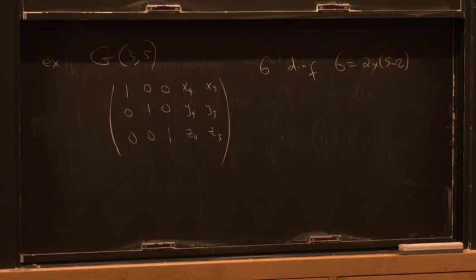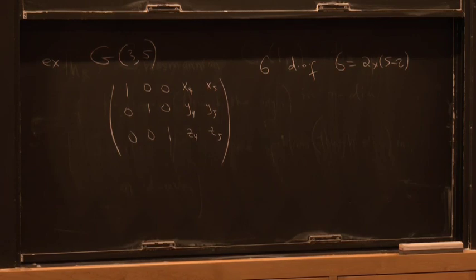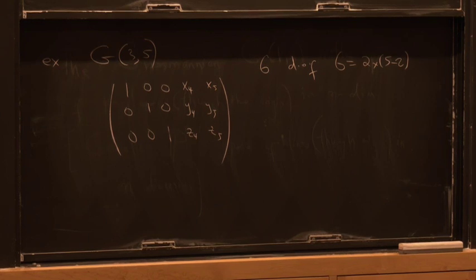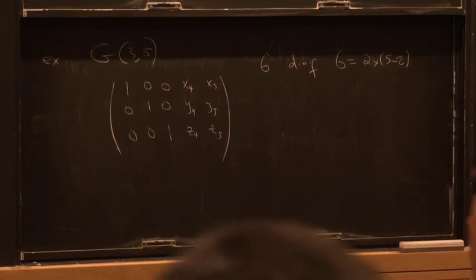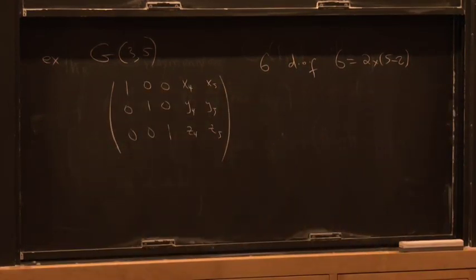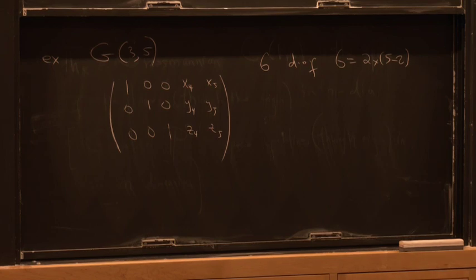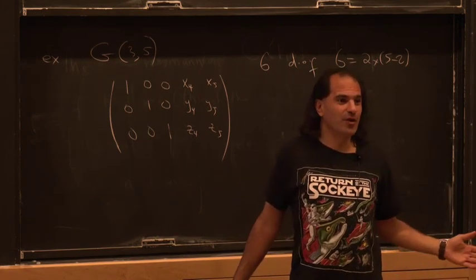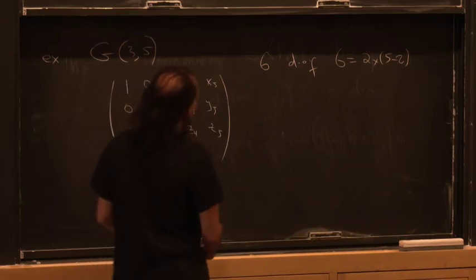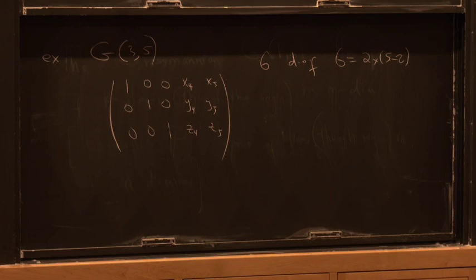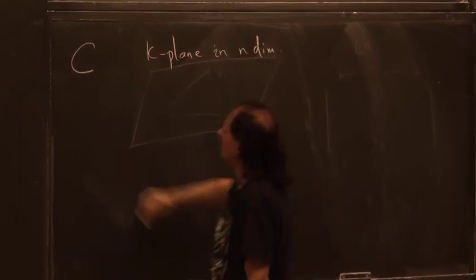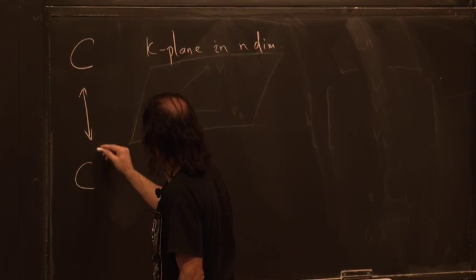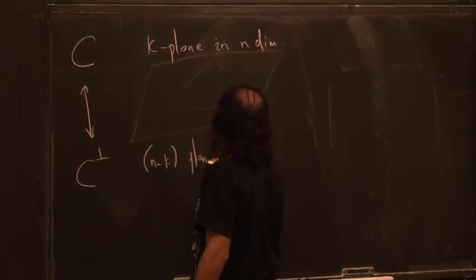The formula for the dimensionality has an obvious symmetry exchanging k and n-k. There's an obvious bijection between k-planes in n dimensions and (n-k)-planes in n dimensions: if I give you a k-plane, I've automatically given you an (n-k)-plane — the plane orthogonal to the first one. So if C is a k-plane, I've also given you C-perp, which is an (n-k)-plane. Given a k-plane in n dimensions, you determine an (n-k)-plane.